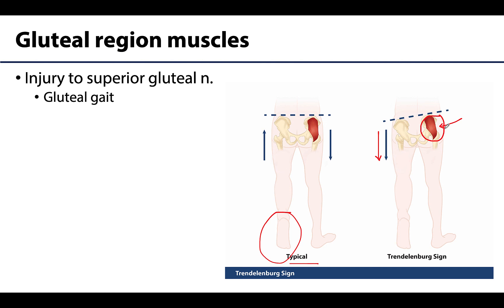This dip is referred to as a positive Trendelenburg sign or test. It causes that lower limb to almost appear too long, and it has a hard time clearing the ground because the pelvis has dipped to one side without the compensation of the medius and minimus on the other side contracting.